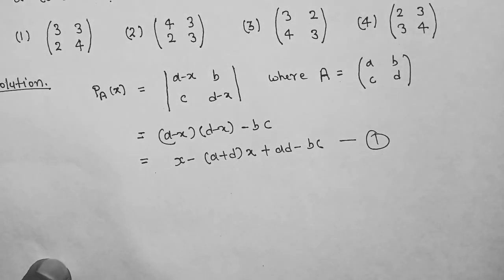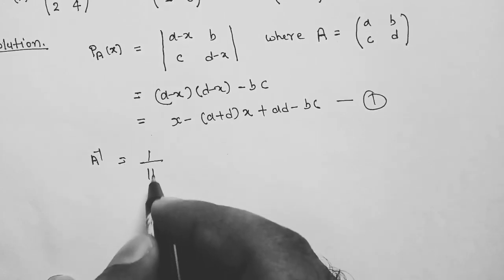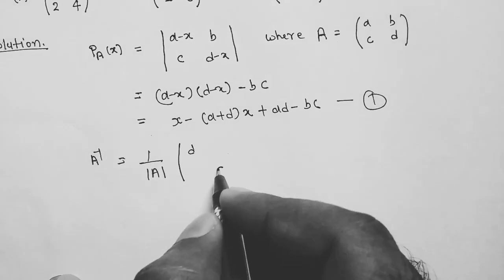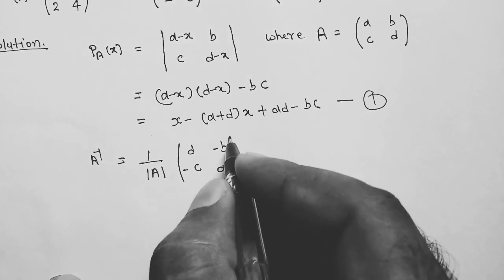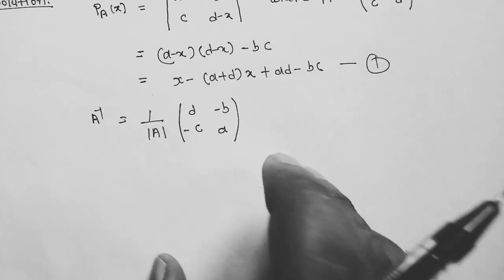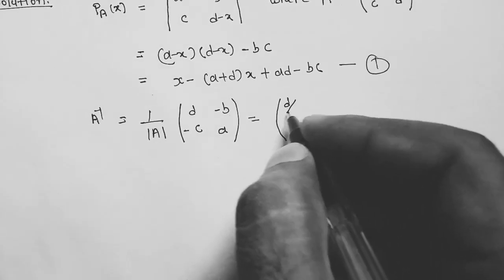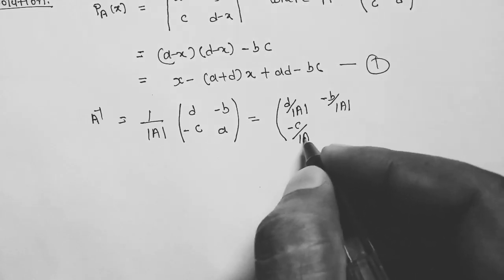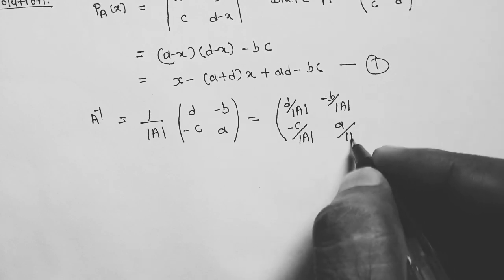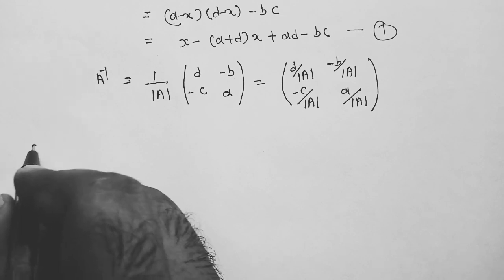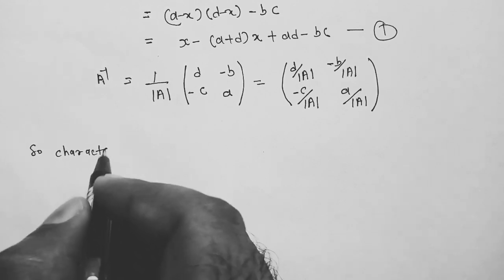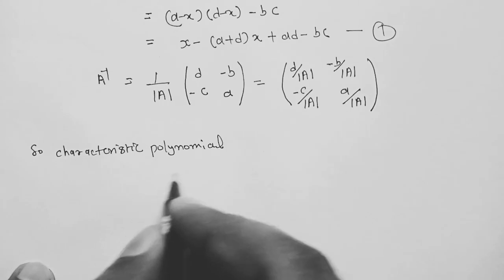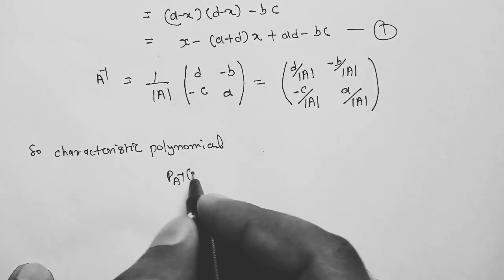A inverse equals 1 over determinant A times the matrix [[D, -B], [-C, A]], so the entries are D over det(A), -B over det(A), -C over det(A), and A over det(A). Now we compute the characteristic polynomial P_{A⁻¹}(x).